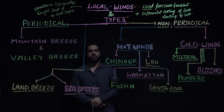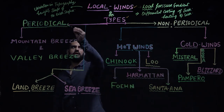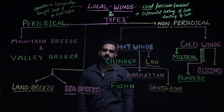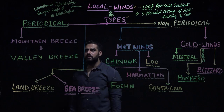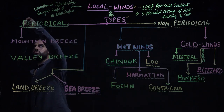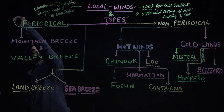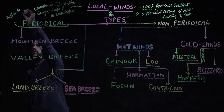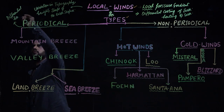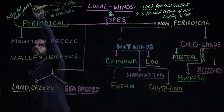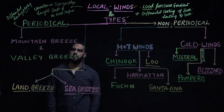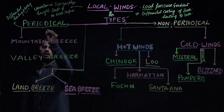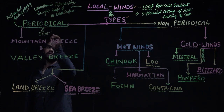These local winds can be of two types. One is called periodical wind and another is non-periodical wind. Periodical winds are generated due to differential heating and cooling. Thus, these winds are also called diurnal winds.